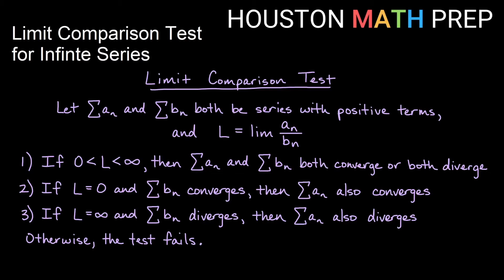Our overall statement of the limit comparison test: we have a series whose behavior we want to know, and some other series we compare it to, and they both have positive terms. Our limit L is the ratio of a sub n over b sub n. If we get some real number between zero and infinity, then they both have the same convergence or divergence behavior. There are a couple of outlier cases that we also use sometimes with the limit comparison test.